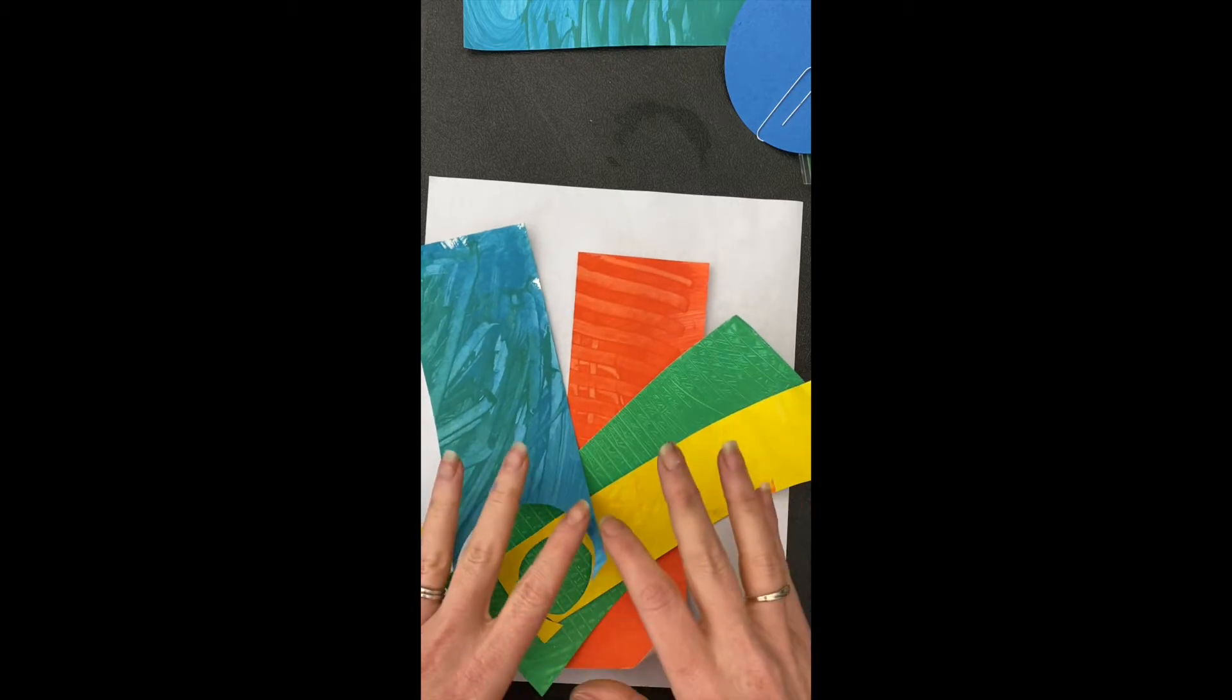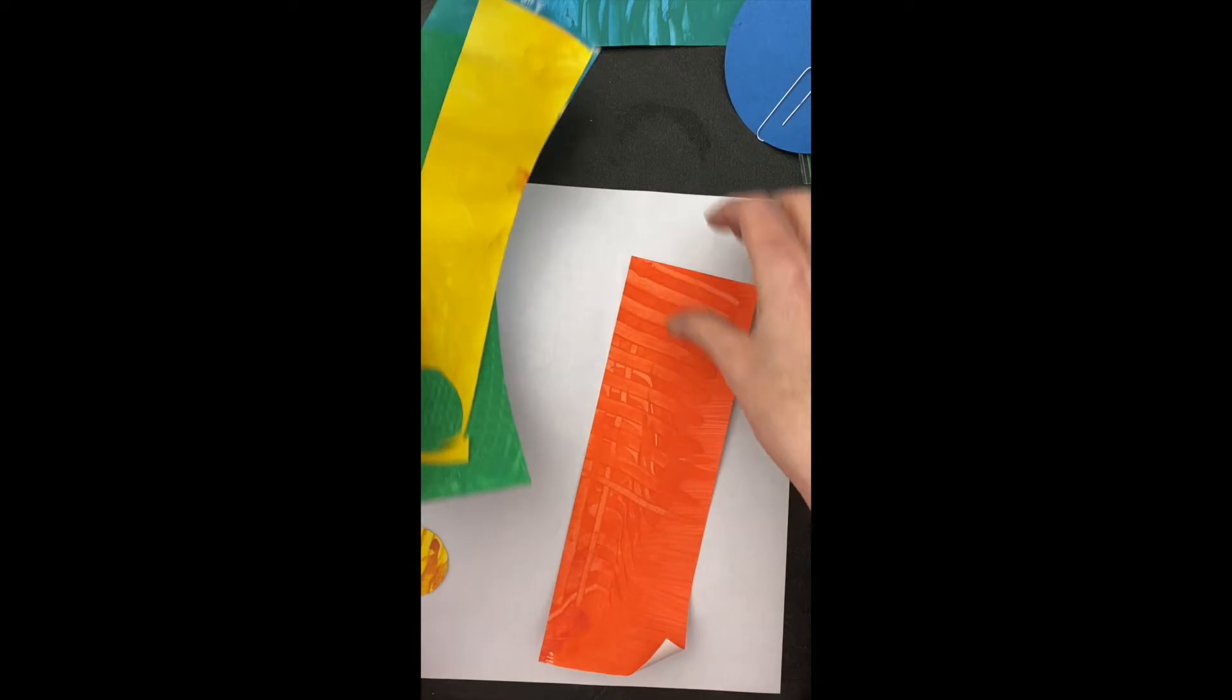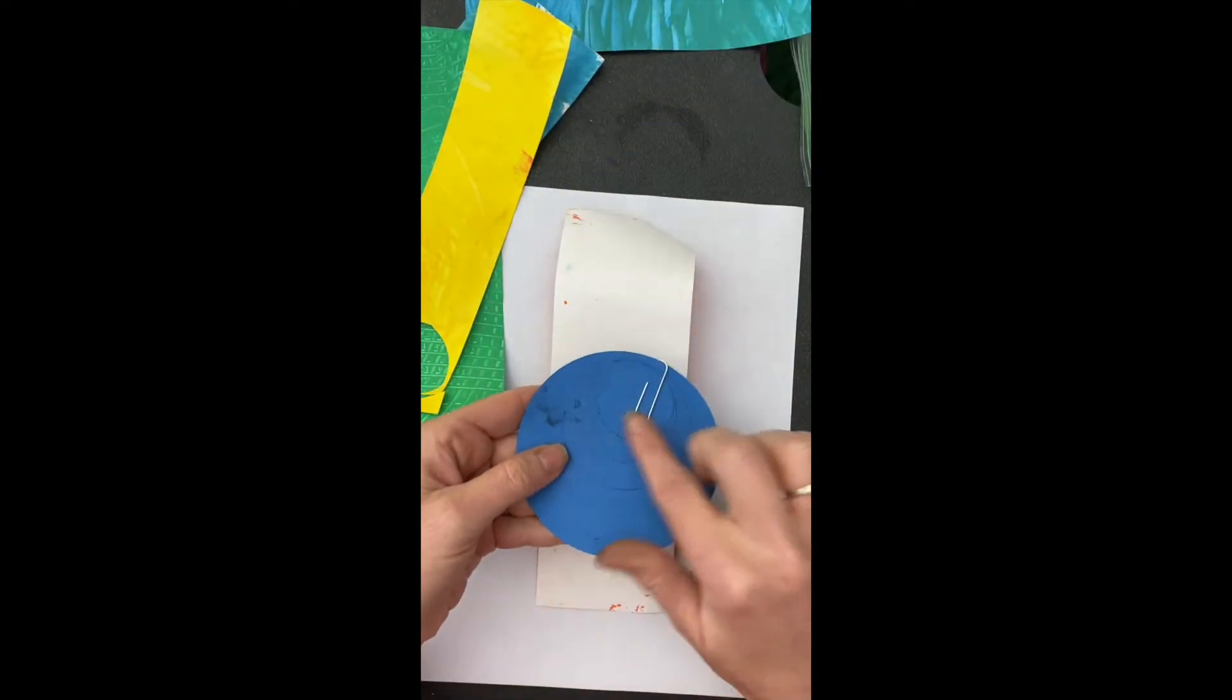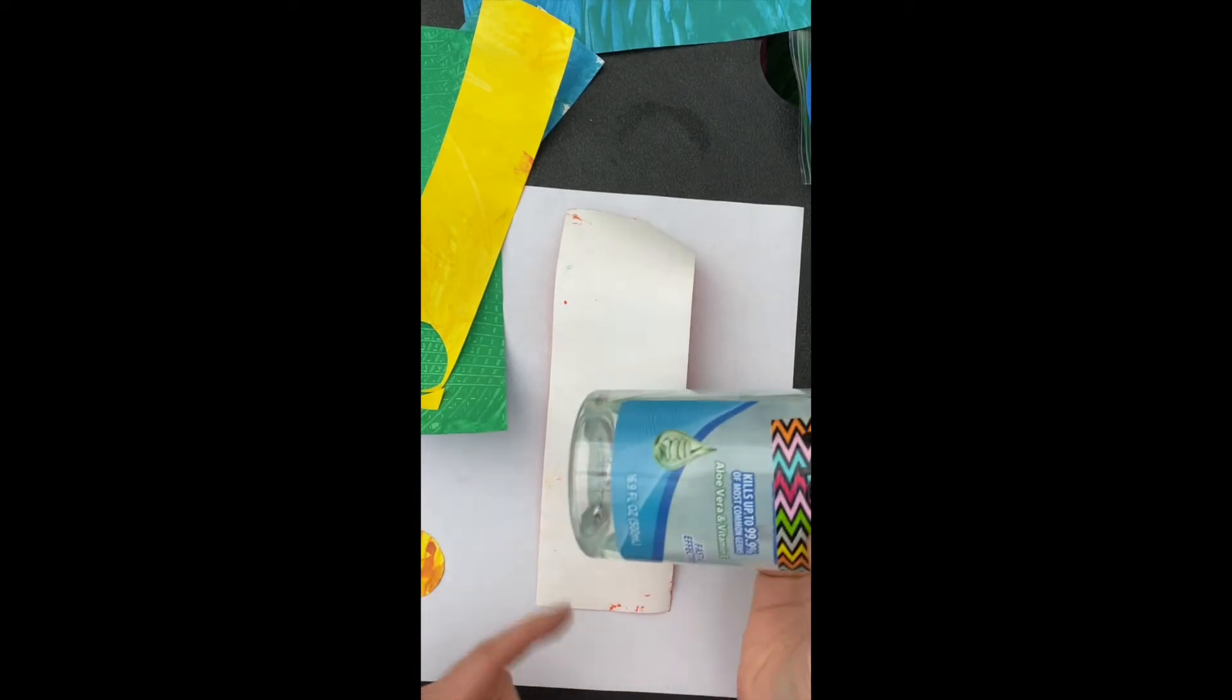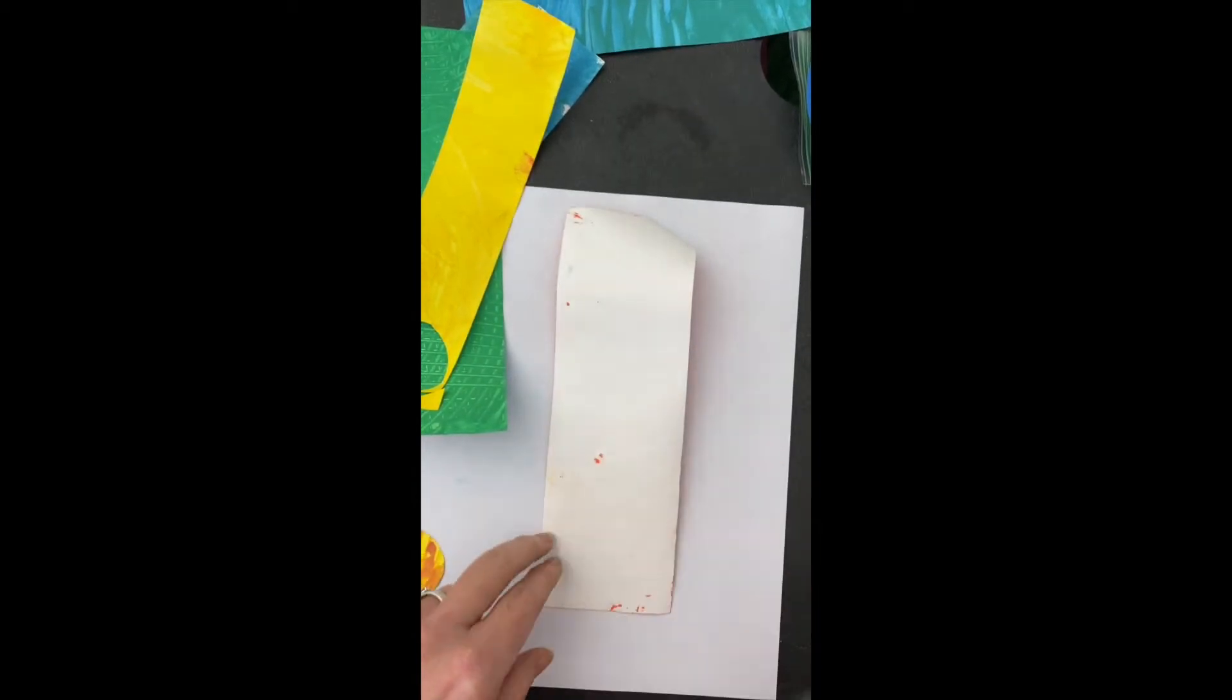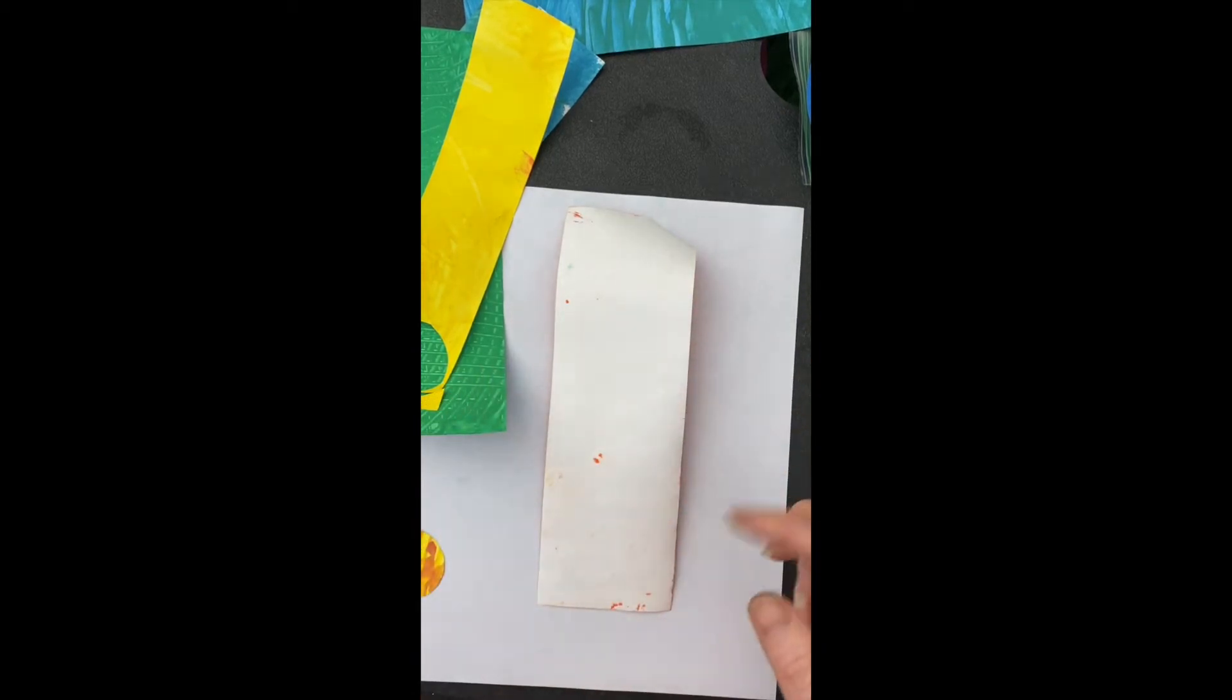So you decide what you think looks good with your galaxy. And then you'll trace them out. If you have something to trace, in class we use tracers, but since you're home, you can find like the end of a water bottle and you can trace it. You can find anything round, or you can just draw it yourself and cut it. It's up to you.